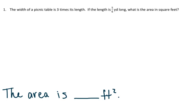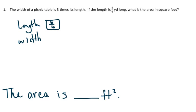We know that the length of the picnic table is five-sixths of a yard. If I just draw a tape here, this is five-sixths — this is the length — and the width is three times as long, so we want to do one, two, three. Our length is five-sixths of a yard, so the width is five-sixths, five-sixths, five-sixths — it's actually fifteen-sixths of a yard.